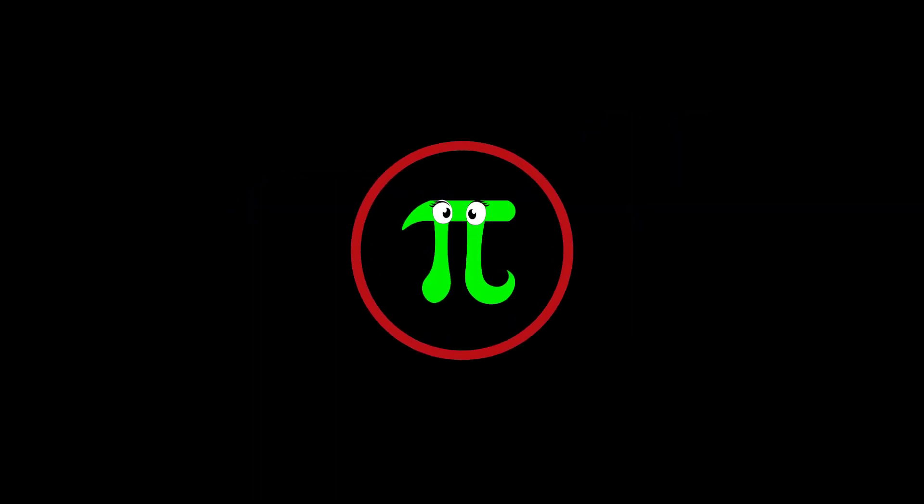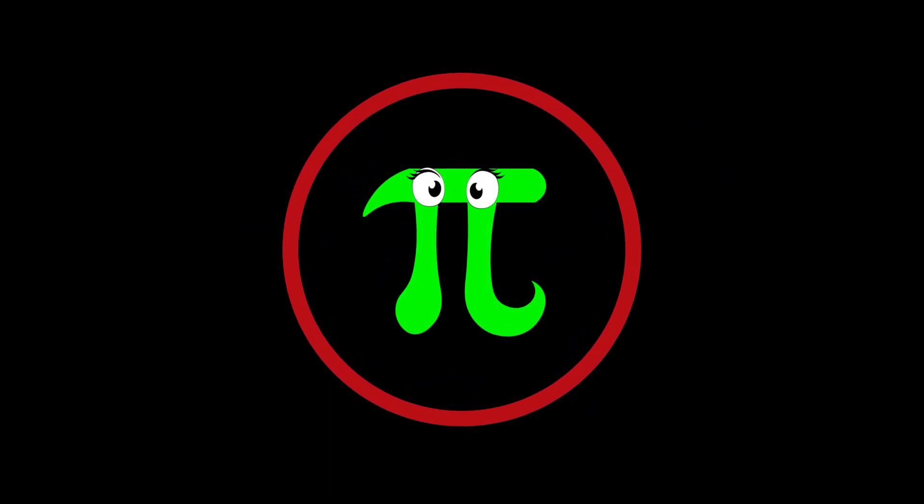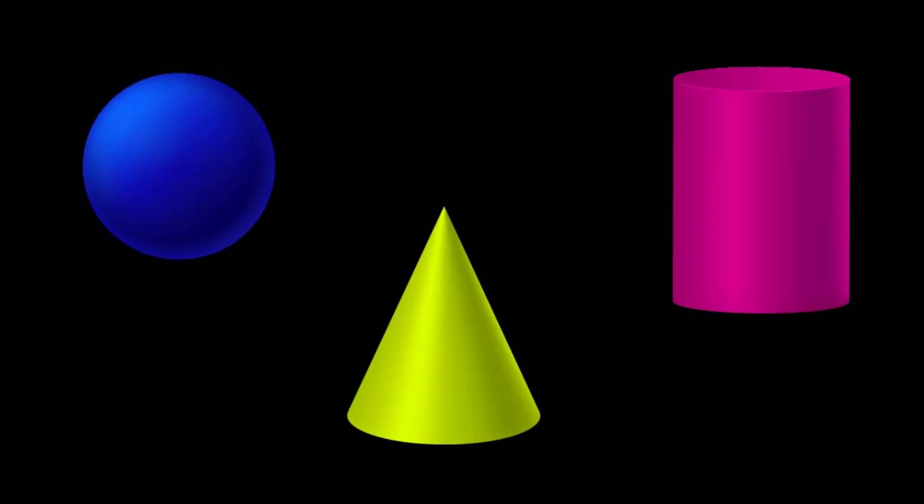Pi is the circle number. Whenever there are circles to be measured or figures that have circles in them such as spheres, cylinders, cones, Pi is sure to be of importance.